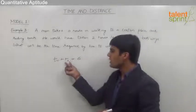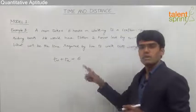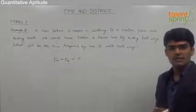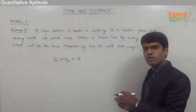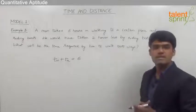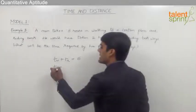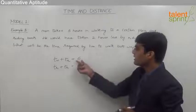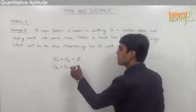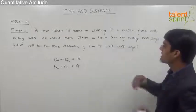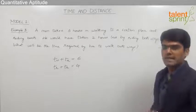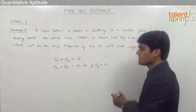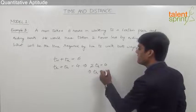The distance covered while walking and while riding is equal since he is moving between the same two points. If he rides both ways, he takes 2 hours less than 6 hours, which is 4 hours. So twice the time taken to ride one side equals 4 hours, meaning the time to ride one side is 2 hours.